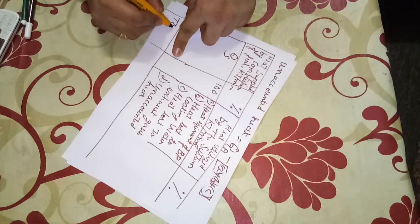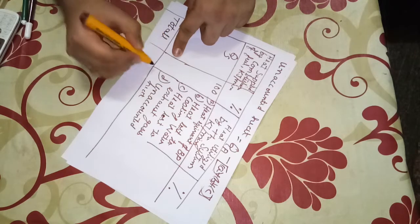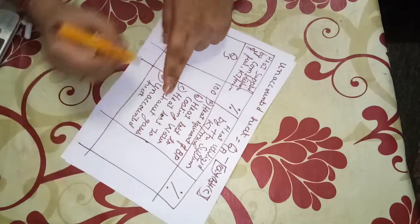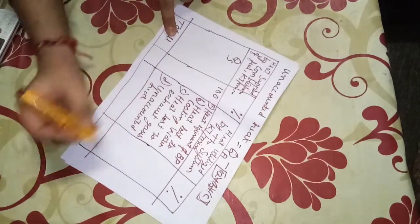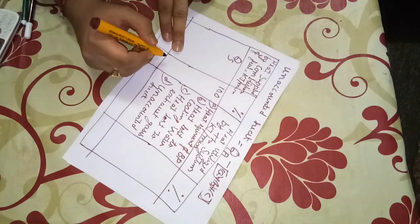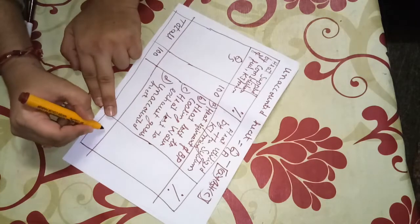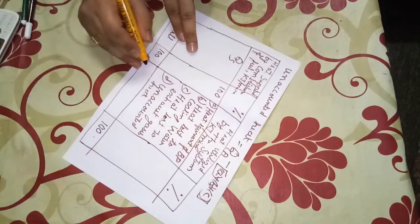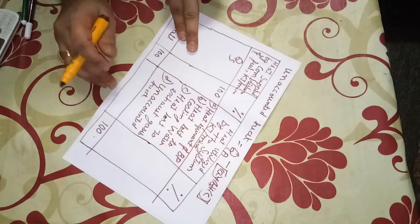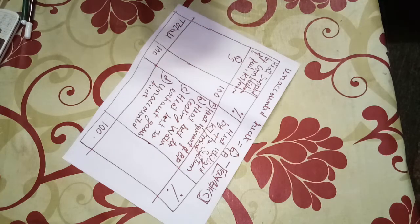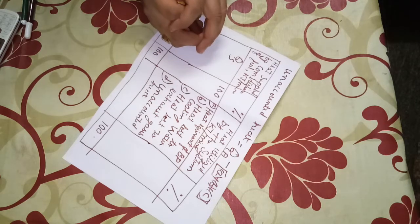The total of the heat utilized column should match with the heat supplied value. This will be the completion of the heat balance sheet. If you like this video, please share and subscribe to my channel.